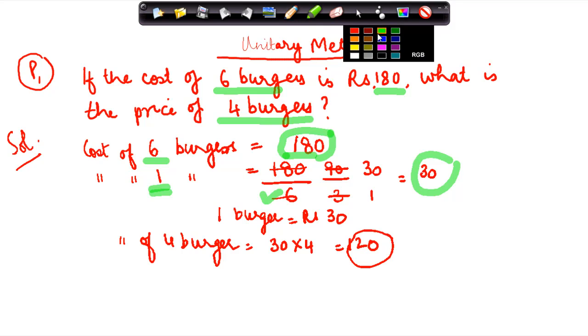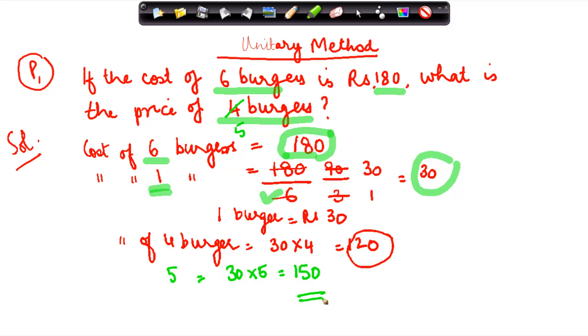So suppose in this example, instead of four, I was supposed to find out the price of five burgers. The price of five burgers would have been the price of one burger into five. And so on. You can find out the price of any number of burgers by doing this simple multiplication.